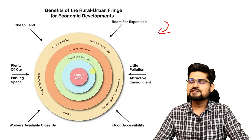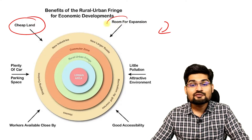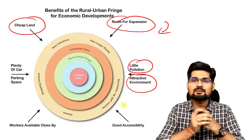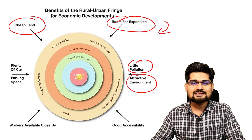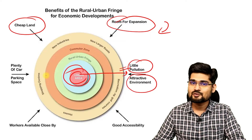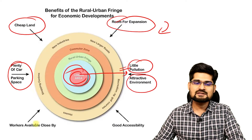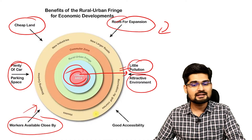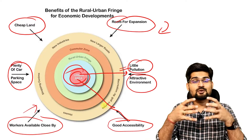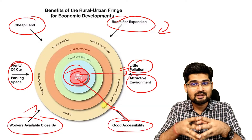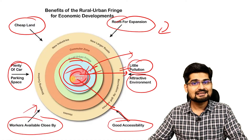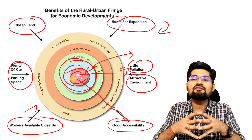The benefits of the rural urban fringe for economic development include: cheaper land, room for expansion, little pollution and a more attractive and green environment. Also, as we talked about the urban heat island in the core of the city, this fringe area will not have those heat islands, which is important for human health. There is also plenty of space for parking, for housing, workers are available from the rural hinterland, and good accessibility from outside and from the urban area. This area is promoted as a very important zone for newer age economic development as older cities become congested and crowded — outskirts are the new opportunities.